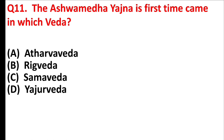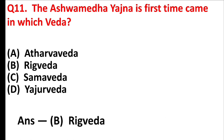The Ashwamedha Yajna is the first time came in which Veda? Option B, Rig Veda.